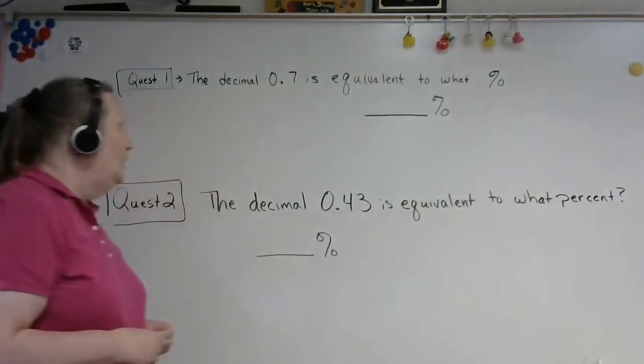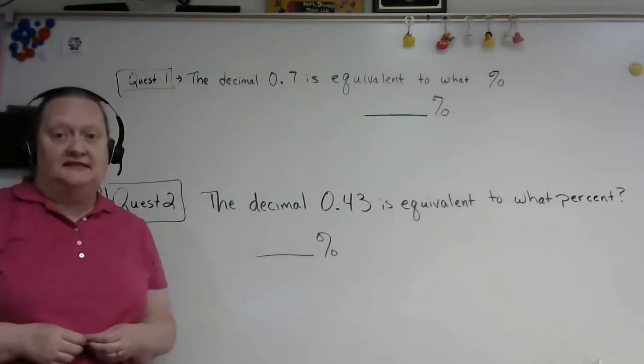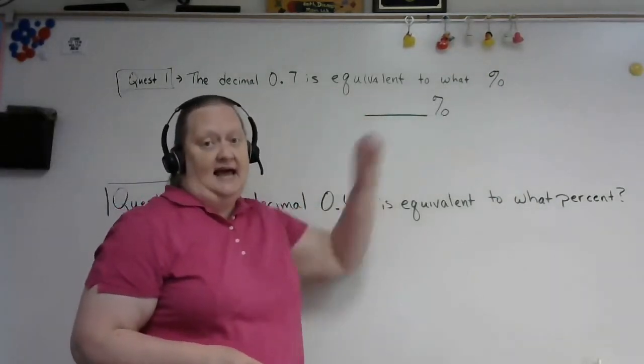In question number 1, the decimal 0.7 is equivalent to what percent? Then there is a blank with a percent sign on it.